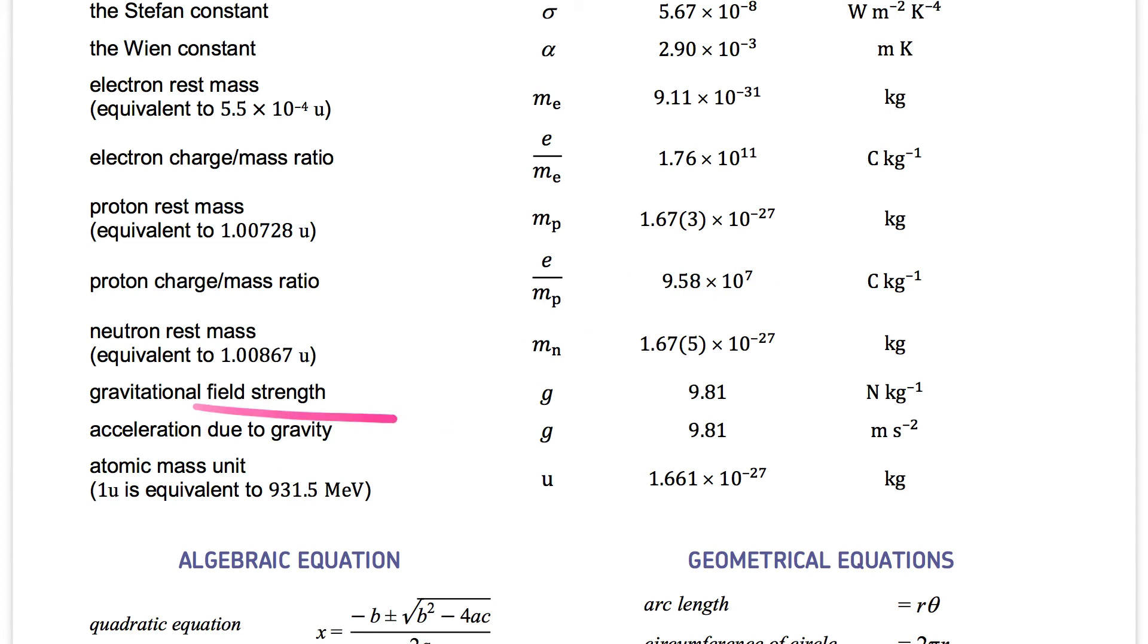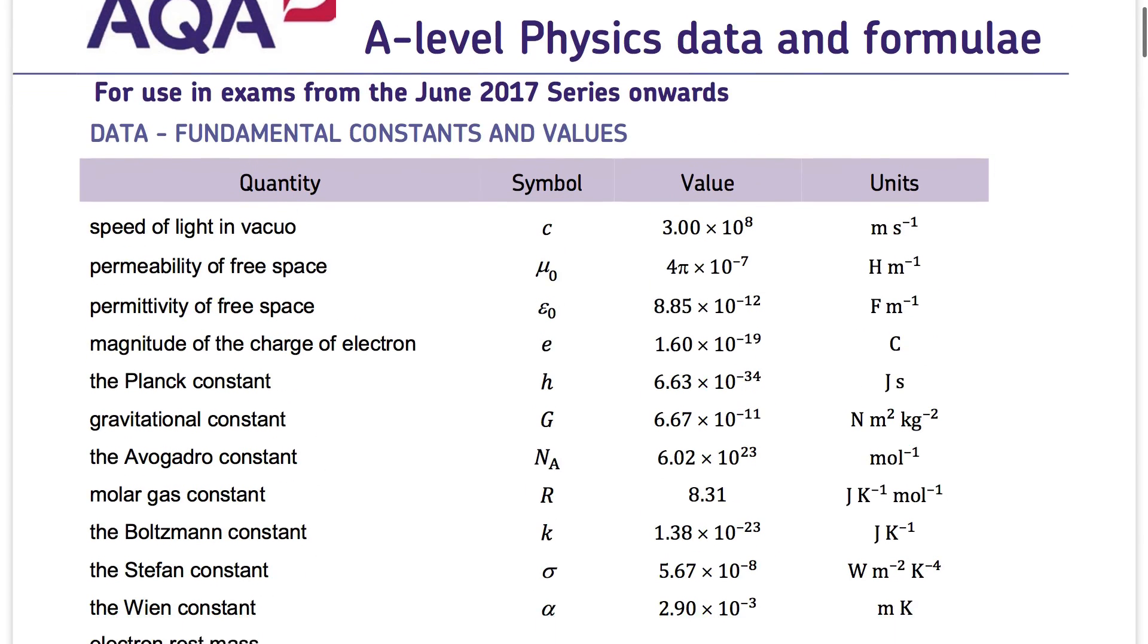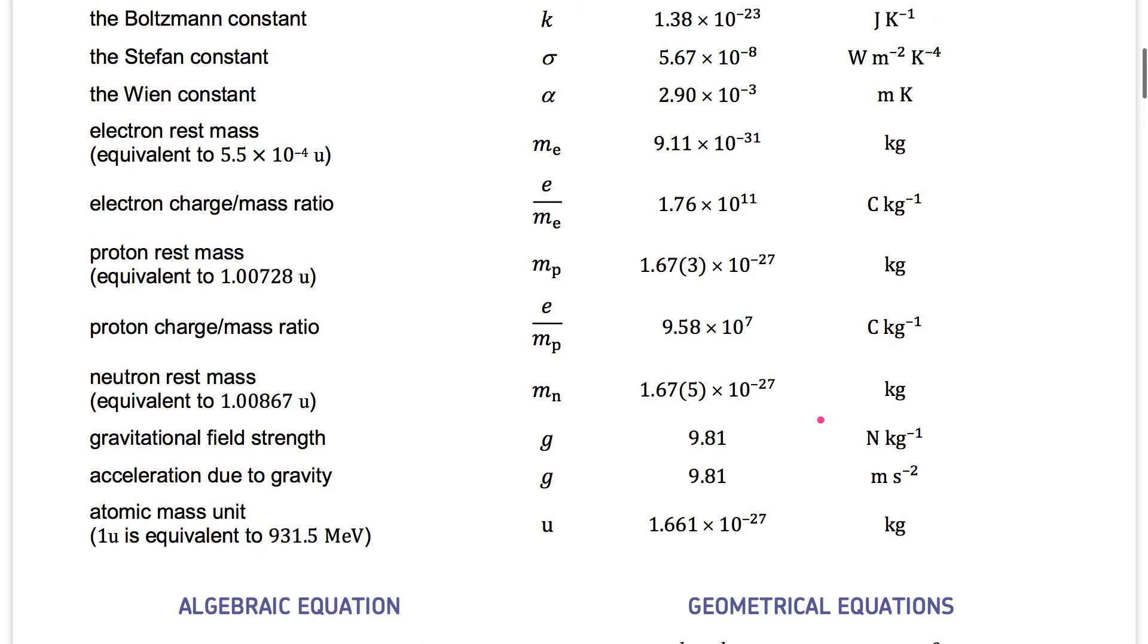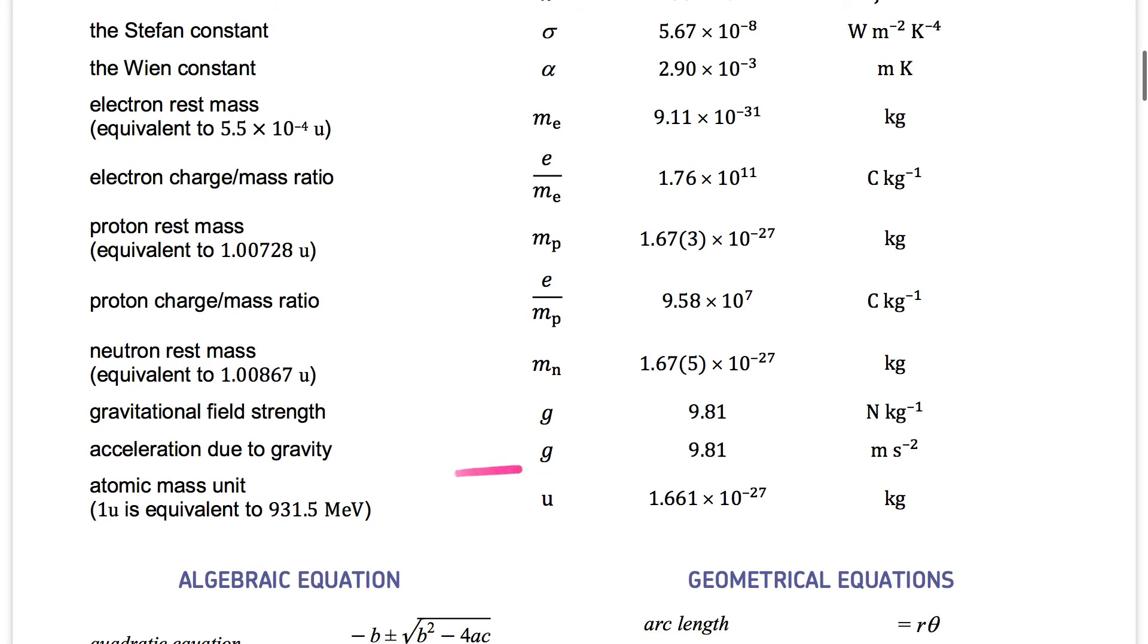Gravitational field strength G. Acceleration due to gravity G. So the symbols are the same, the value is the same. The difference is in the units. For acceleration due to gravity, we use meters per second squared. And for gravitational field strength, we use newtons per kilogram.